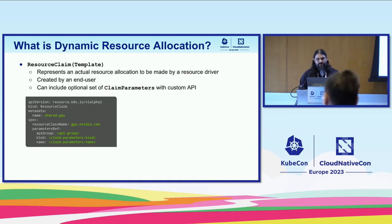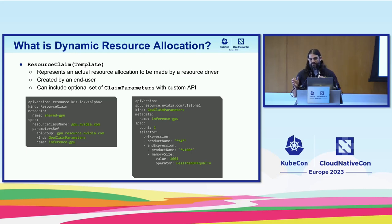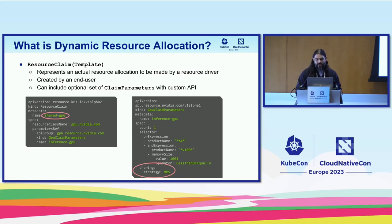Just as with resource classes, resource claims can include an optional set of claim parameters with whatever custom API you've defined for your resource type. For NVIDIA GPUs, the GPU claim parameters object lets you say that when creating a claim for a GPU, it must be of product family T4 or a V100 with less than or equal to 16 gigabytes of memory. This lets you selectively and precisely request the type of GPU you want.